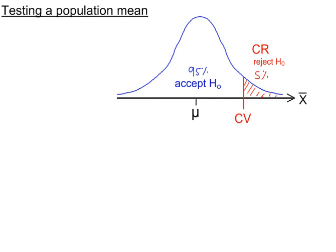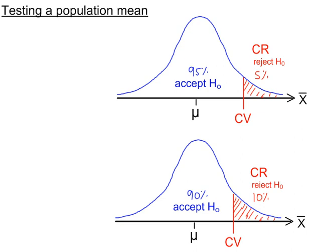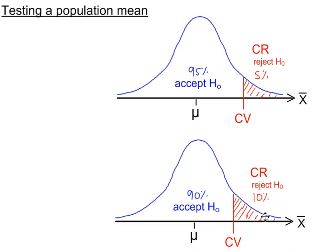Let's see what happens if we make the rejection region larger. Using an increased significance level — a 10% significance level — makes the rejection region larger, so the probability of a type 1 error has increased. But the acceptance region is smaller compared to before, so the probability of a type 2 error has decreased.